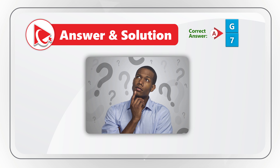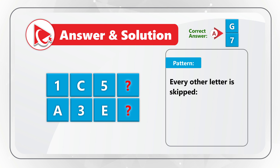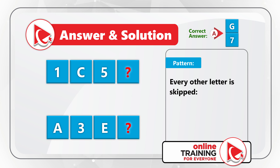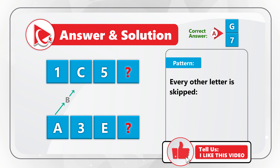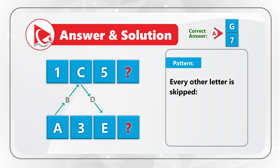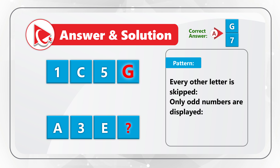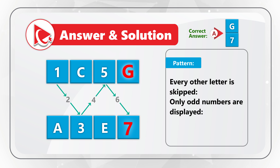Here's why: the pattern is that every other letter is skipped. Starting from the bottom letter A, then B is skipped, we see C in the second column. D is skipped, we see E, which means F will be skipped and we see G. The same is true for the numbers — only odd numbers are displayed. We see 1, 3, and 5; numbers 2, 4, and 6 are skipped, which means the missing number is 7. The correct choice is A, G, 7. Did you figure it out? Please post your answer and solution in comments.